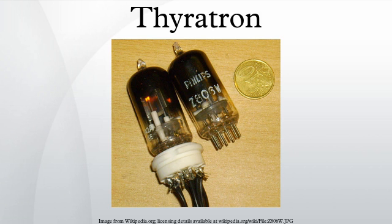Medium power thyrotrons found applications in machine tool motor controllers, where thyrotrons, operating as phase controlled rectifiers, are utilized in the tool's armature regulator and in the tool's field regulator. Examples include the Monarch machine tool 10 EE lathe, which used thyrotrons from 1949 until solid state devices replaced them in 1984.